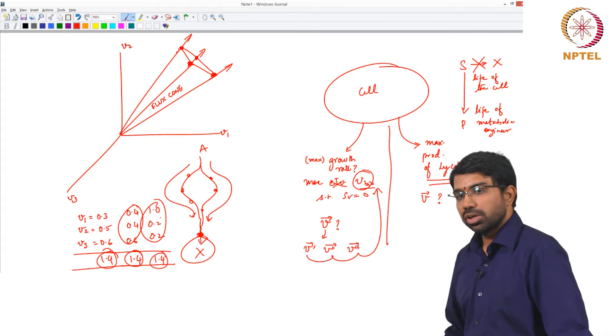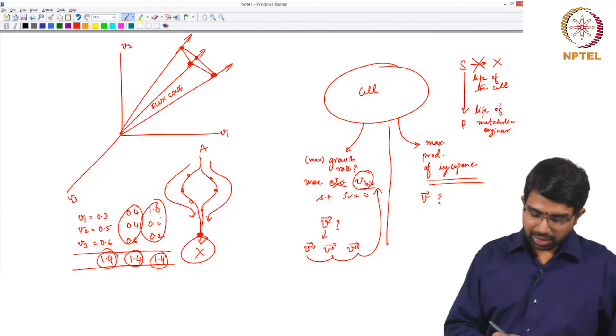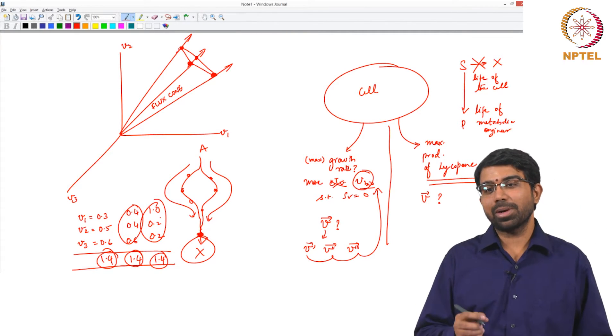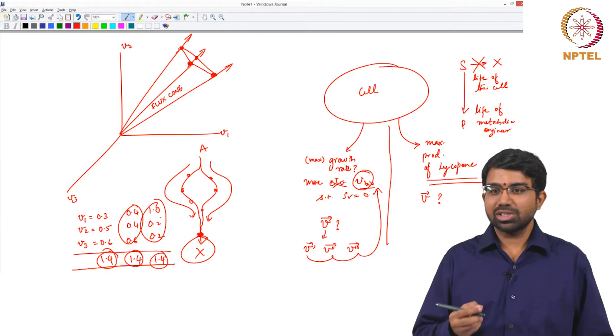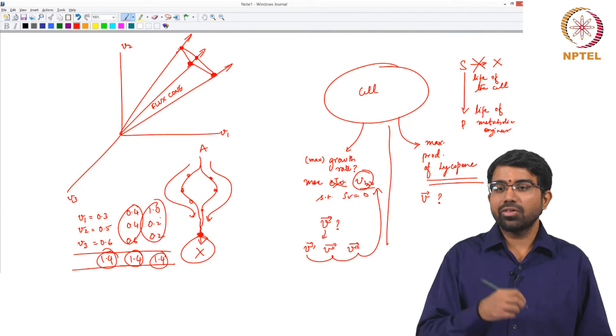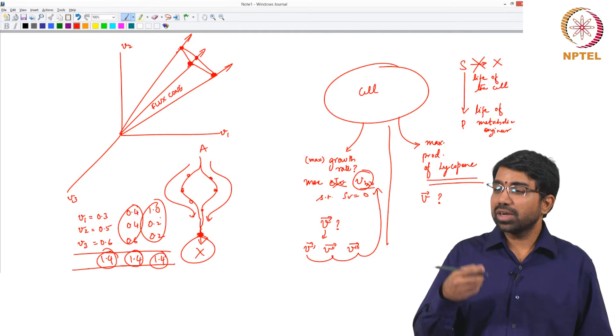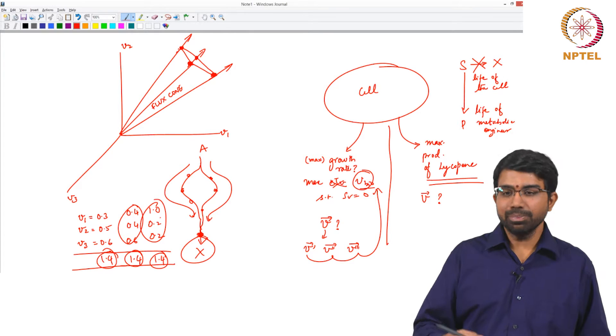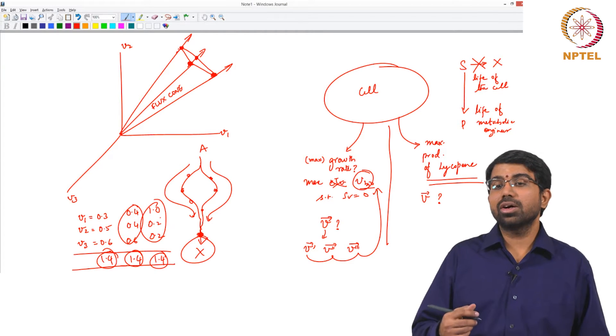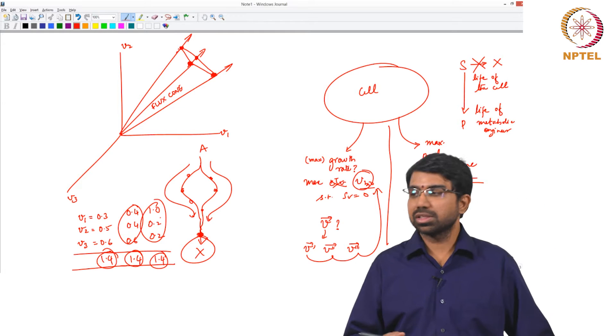So in other words, you are very confident of the FBA prediction, the growth rate prediction from FBA whereas you are not that sure of the flux distribution that you obtained from FBA. It is only one of the many possible flux distributions.